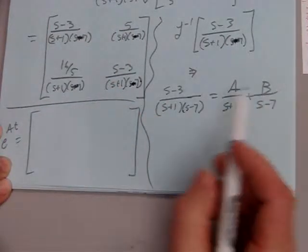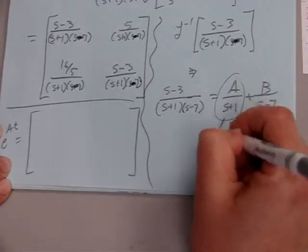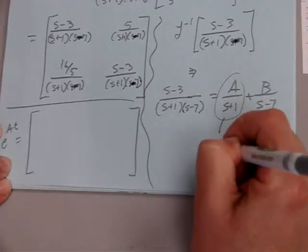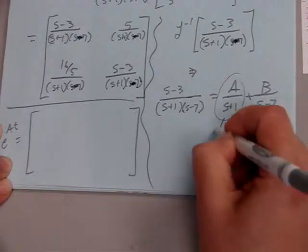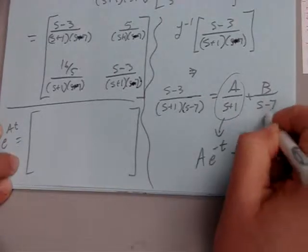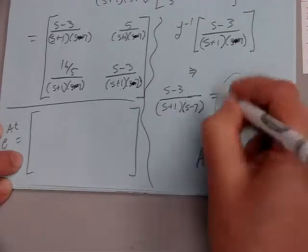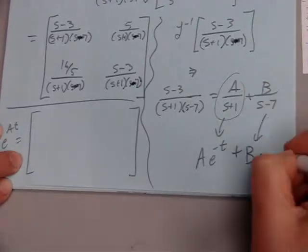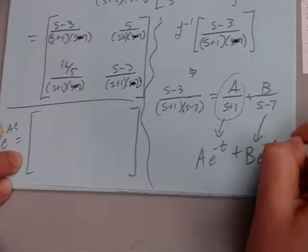So say we did this one, we got some A, B here. The inverse Laplace transform of A over s plus 1 is A times e to the negative t, and the Laplace transform of the second term will be B, whatever you get for that number, e to the 7t.